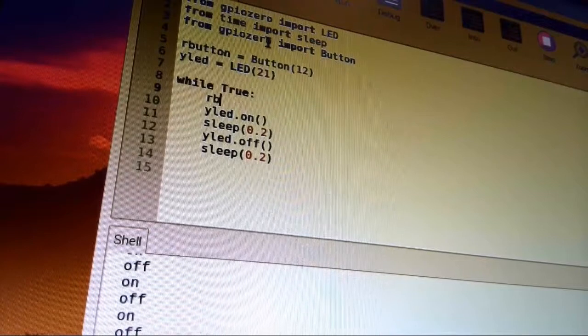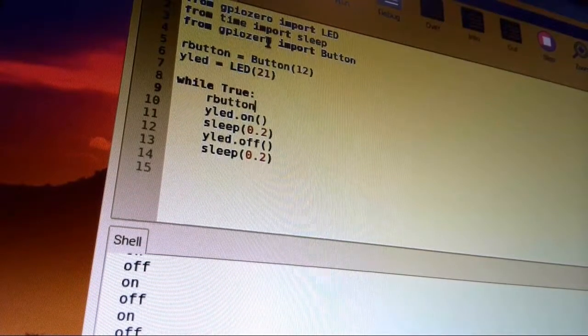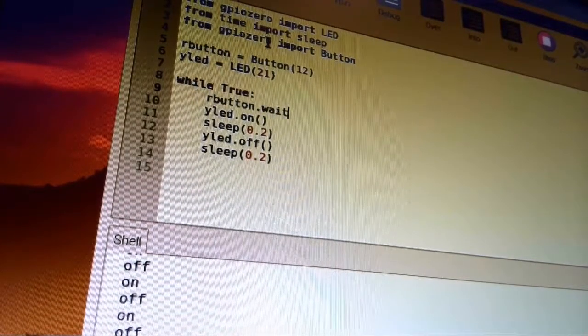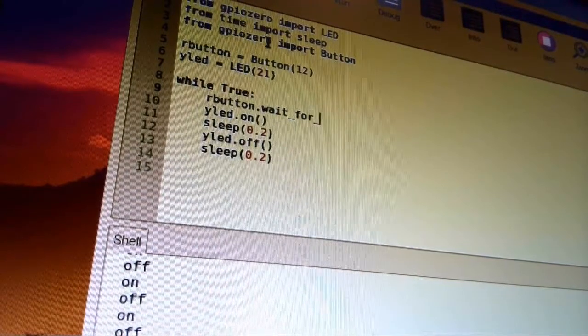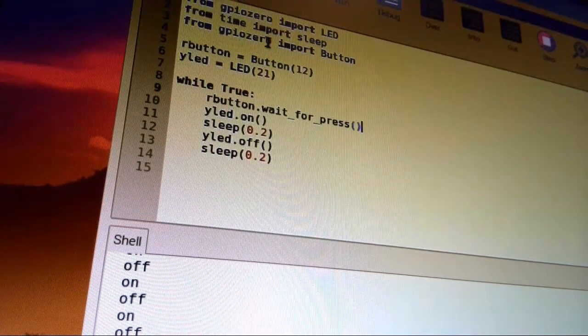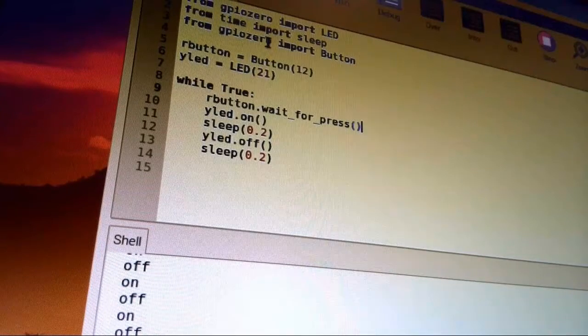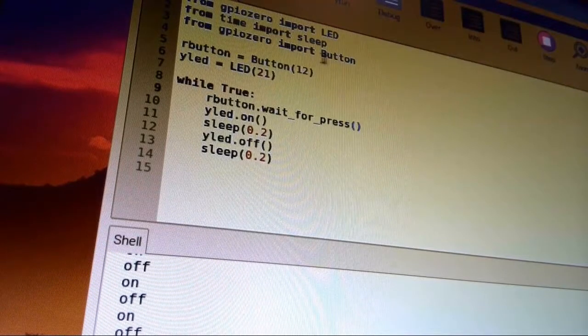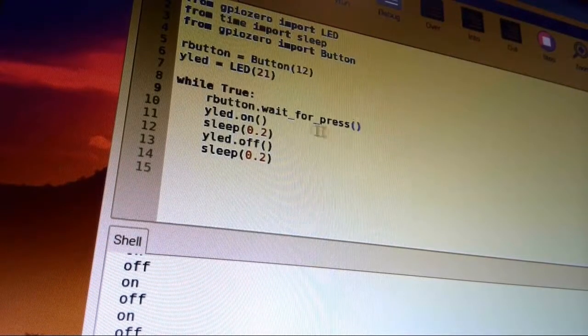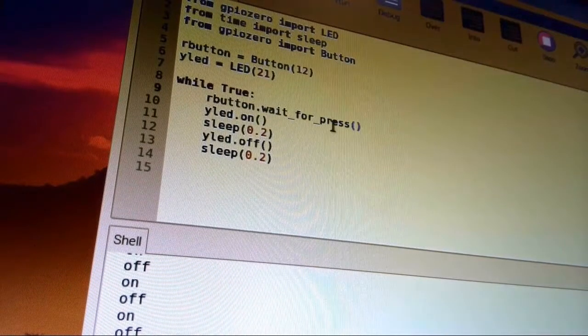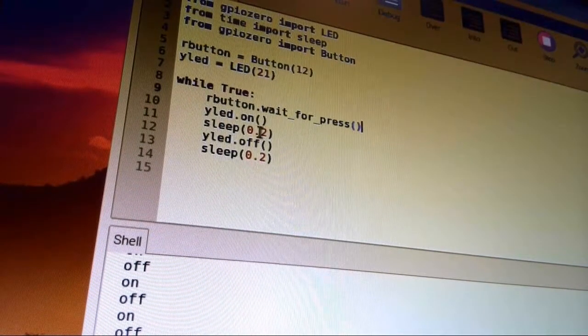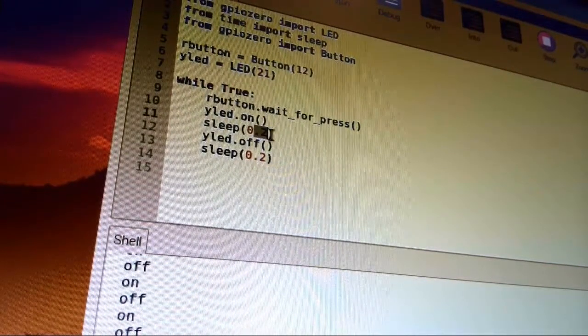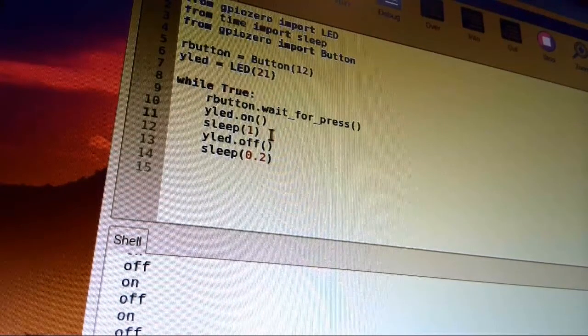So 'rButton.wait_for_press', and that function to wait for the press was imported when we brought in that button library from GPIO Zero. So 'rButton.wait_for_press', then we'll turn on the LED and let it sleep. I think I'm going to let it sleep a little longer so it doesn't read multiple button presses from just one.